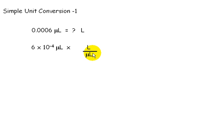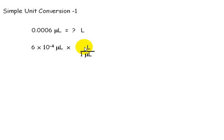Now we find the one with the prefix. This has a prefix, so we put a 1 beside it. The prefix micro means 10 to the negative 6th, so we put 10 to the negative 6th up here.